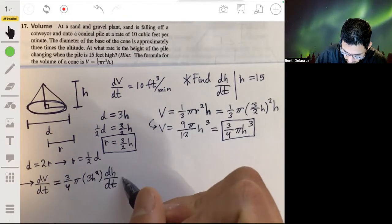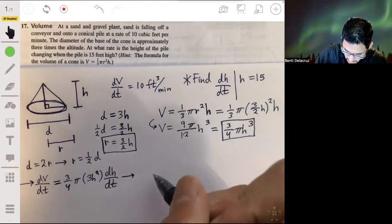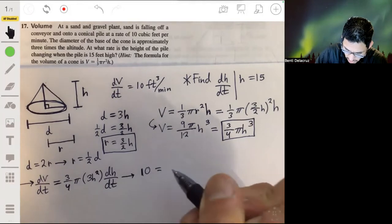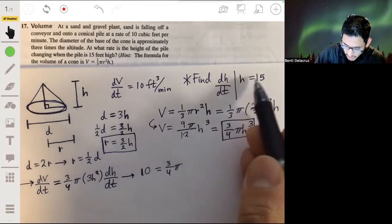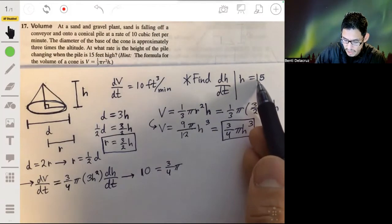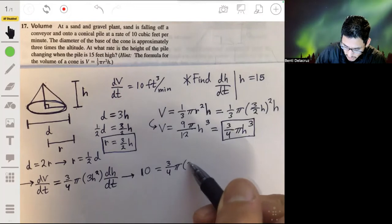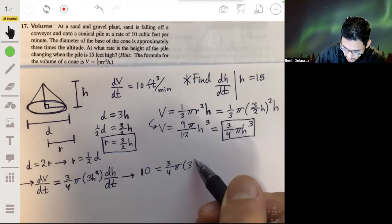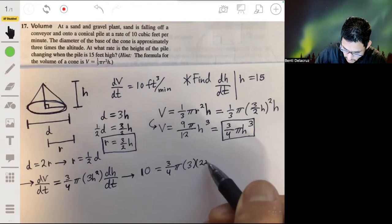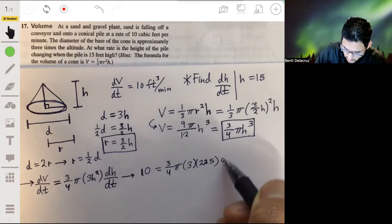So if you write this as 10 being equal to three-fourths pi times three times fifteen squared. So three times fifteen squared will just be 225, dh/dt.